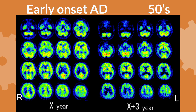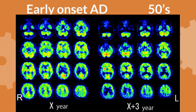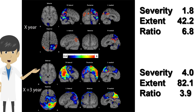In a longitudinal brain perfusion SPECT case of Alzheimer's disease with onset in the 50s, at year X there is decreased perfusion in the right temporoparietal lobe. Three years later, there is decreased perfusion in the bilateral temporoparietal cortex, more pronounced on the right. The EZI shows hypoperfusion in the right parietotemporal cortex and posterior cingulate gyrus to precuneus at year X, with high severity 1.8, extent 42.2%, and ratio 6.8 (thresholds: severity 1.2, extent 14.2%, ratio 2.2). Three years later, progressive bilateral temporoparietal and frontal perfusion decrease was seen; severity and extent increased while ratio decreased due to perfusion reduction extending beyond the specific VOI.